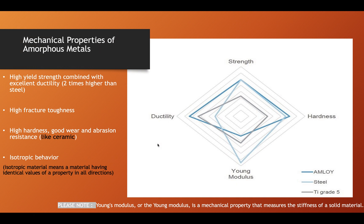Now I'll be talking about the mechanical properties of amorphous metals. Number one, it has high yield strength combined with excellent ductility — two times higher than steel. Second, it has high fracture toughness. Third, it has high hardness, good wear and abrasion resistance, like ceramic.